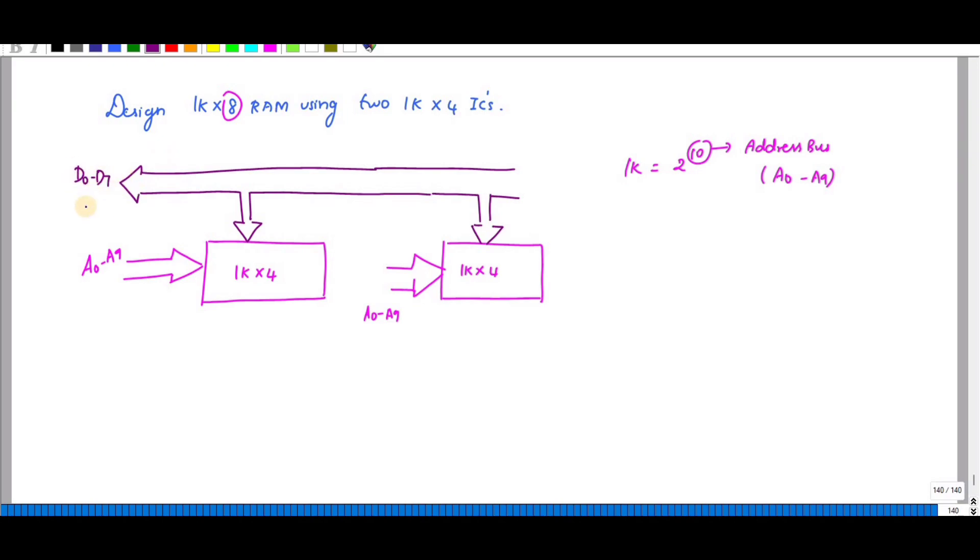It ranges from D0 to D7, from D0 to D3 and D4 to D7. The chip select pin, write and read pins are common for both. This is an active low pin - the chip select pin, the read pin, and the write pin. This is how we have to connect.